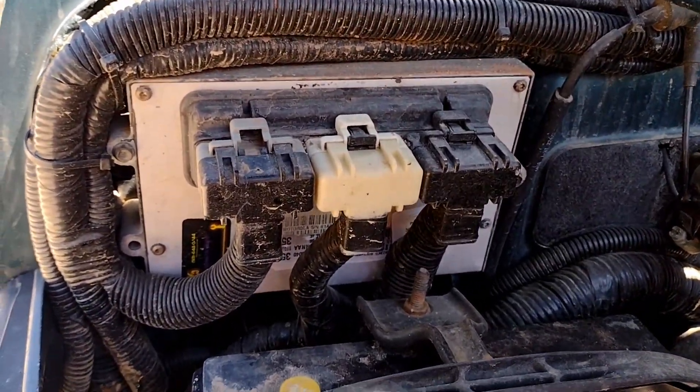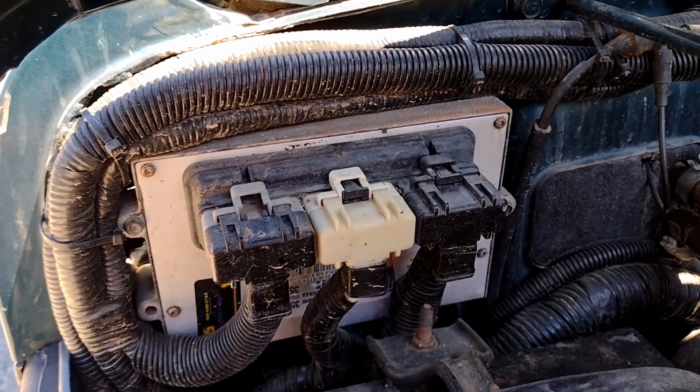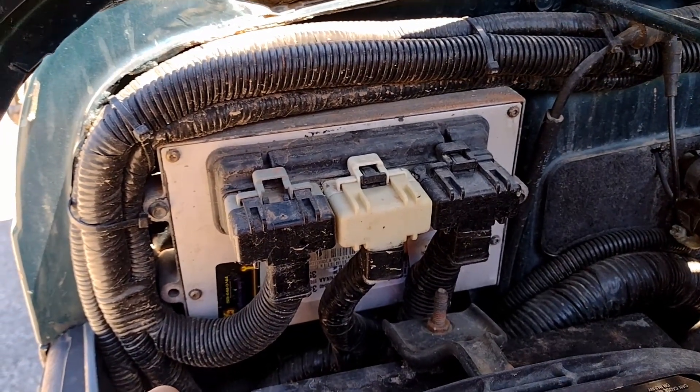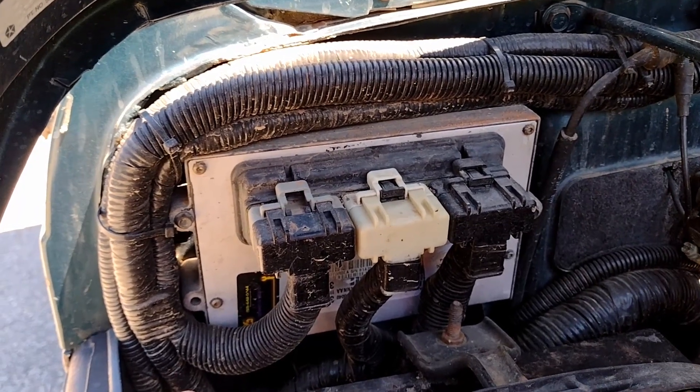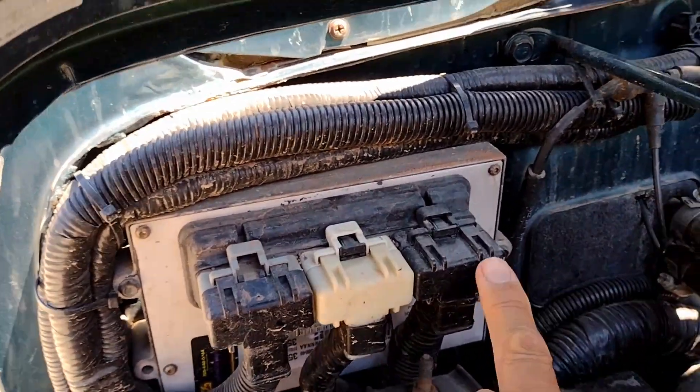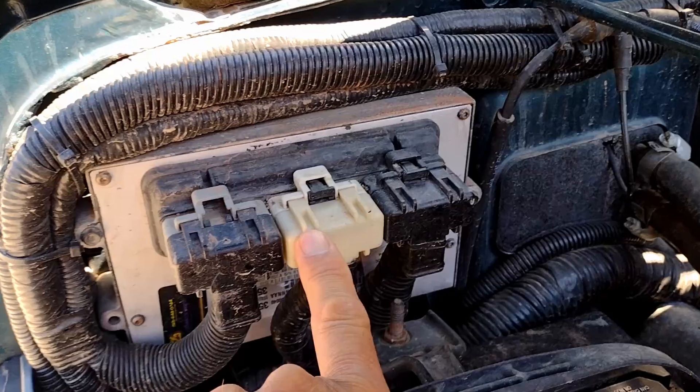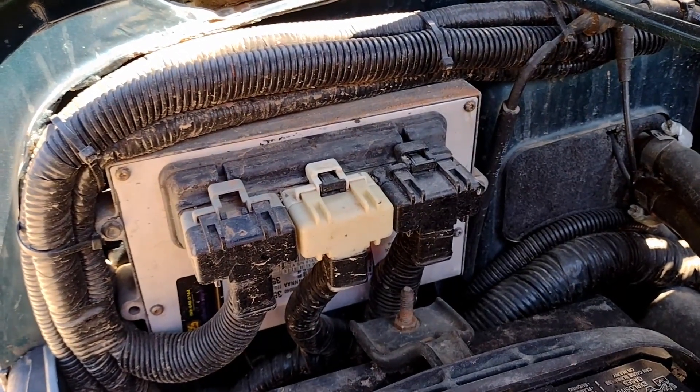Just a note: Jeep and Dodge label things differently. On Dodge, this would be C1, C2, C3. On Jeep, it's going to be C1, C2, C3. Ignore that. They're just engineers labeling.